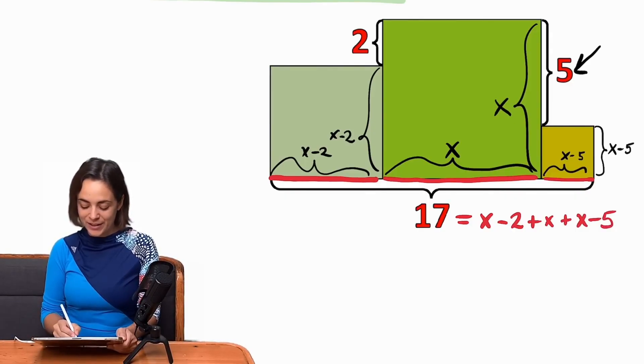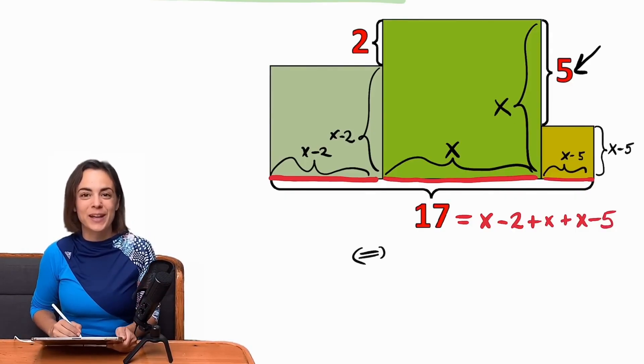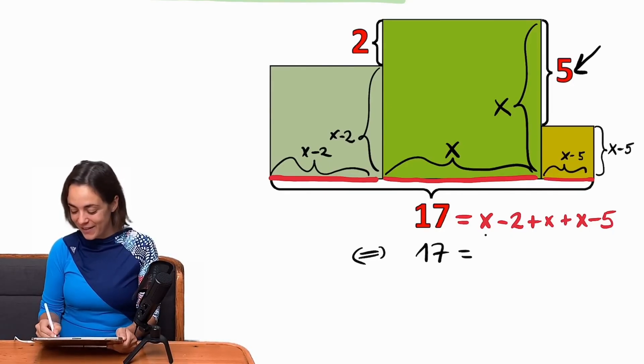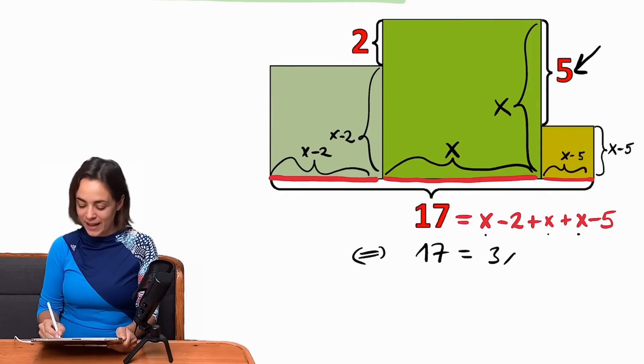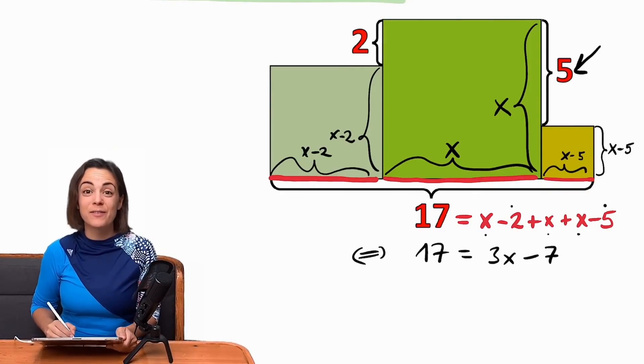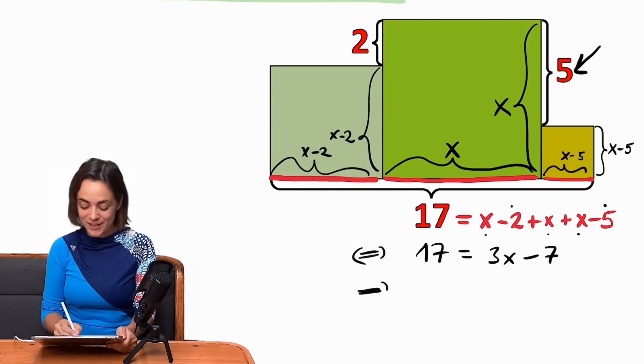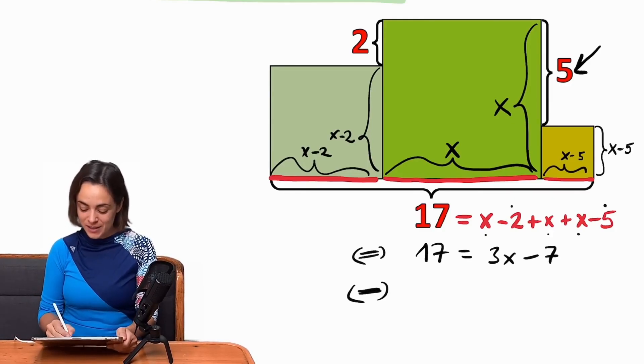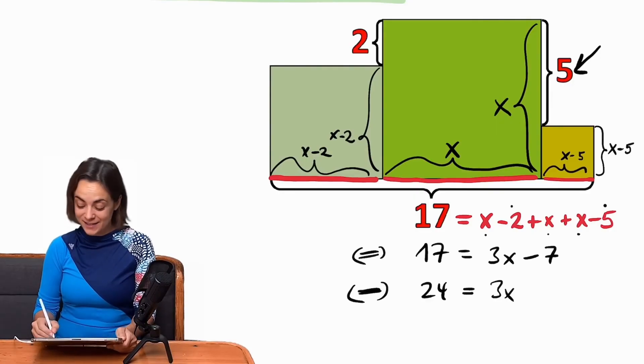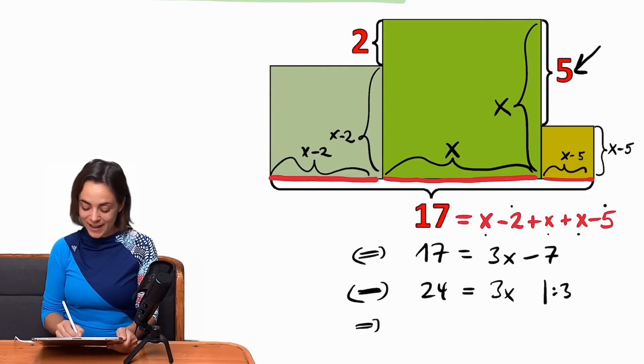And now you can carefully unpack your knowledge of equations and step by step write down 17 equals. On the other side we have x and again and again, so 3x. And minus 2 minus 5, well that's minus 7. And now I've moved the 7 to the other side. 17 and 7 make 24. So 24 is 3x, divided by 3 yields that our x is 8.